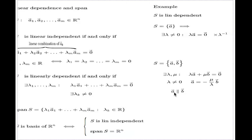For one vector, linear dependence being zero. For two vectors, linear dependence being parallel.